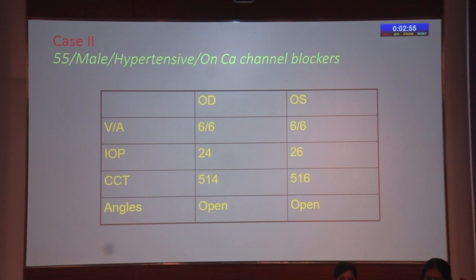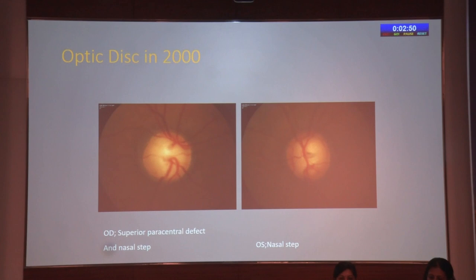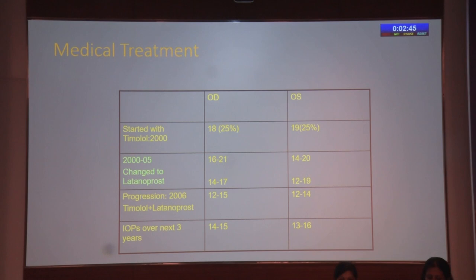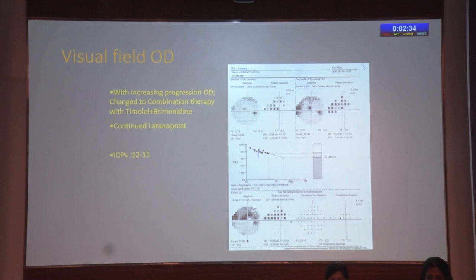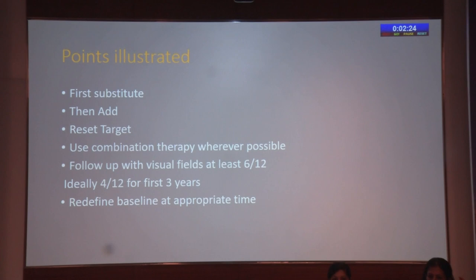The second case is a patient with IOP around 24 and 26, hypertensive and on calcium channel blockers, with disc and field changes indicating moderate glaucoma. We started with timolol, achieving a 25% drop in IOP, but over five years the IOP started creeping up, so we changed to latanoprost. There was progression, so we combined timolol and latanoprost over the next few years. The patient continued to progress, though slowly, so we added a combination therapy of timolol and brimonidine, continuing latanoprost.